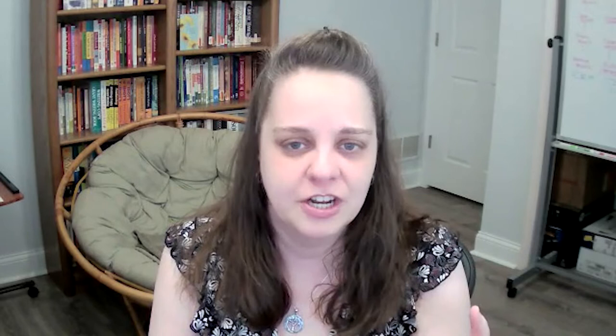Some gazetteers also contain historical data related to the place, including social statistics, boundary changes, and the overall history of a place. This is good stuff, right? Here's a portion of a page from a complete descriptive and statistical gazetteer of the United States, published in 1840, to give you an idea of what a gazetteer might look like.